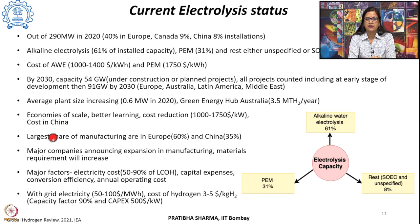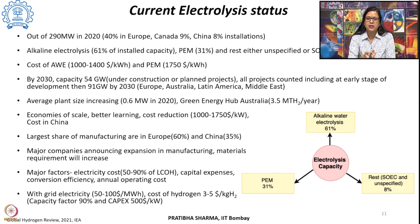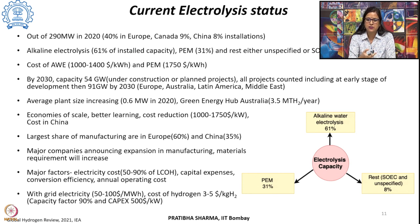Europe has the largest electrolyzer manufacturing capacity at 60%, with China second at 35%. Several major companies — including Thyssenkrupp, ITM, Cummins, and Nel Hydrogen — are expanding their manufacturing capacity. As manufacturing capacity increases, material requirements will also increase, though future technological advances are expected to reduce the amount of precious materials used.